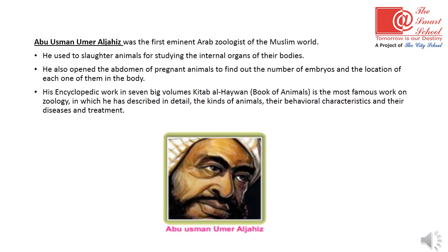Another zoologist of the Muslim world was Abu Usman Umar, the first eminent Arab zoologist. He used to slaughter animals for studying their internal organs. He also opened the abdomen of pregnant animals to find out the number of embryos and the location of each one in the body. His work is in seven volumes — a book called The Book of Animals — describing kinds of animals, their behavior, characteristics, diseases, and treatments.